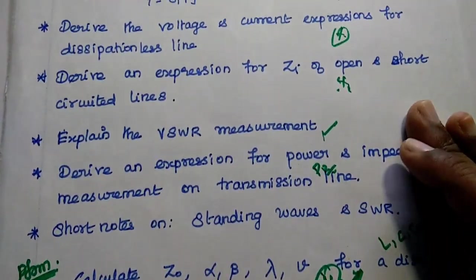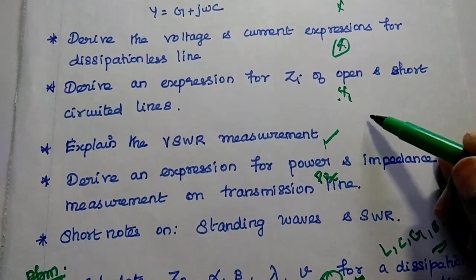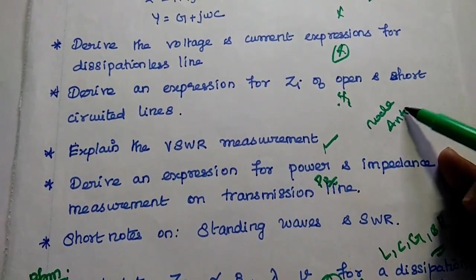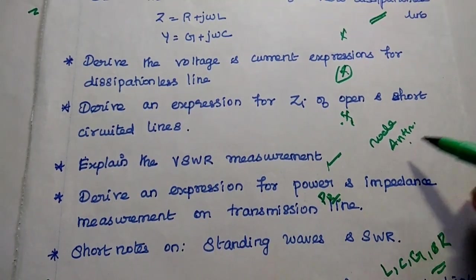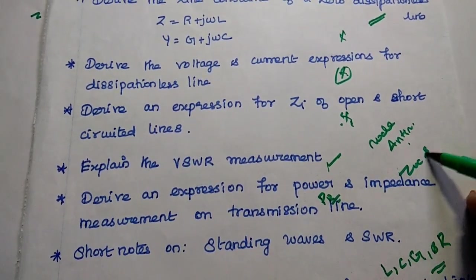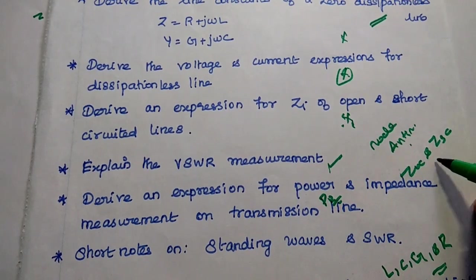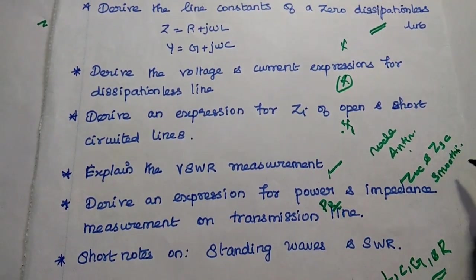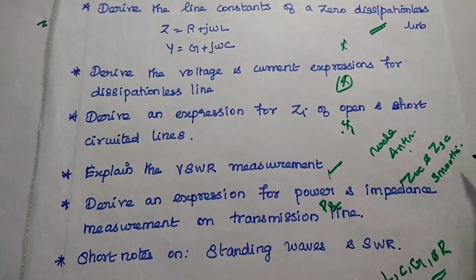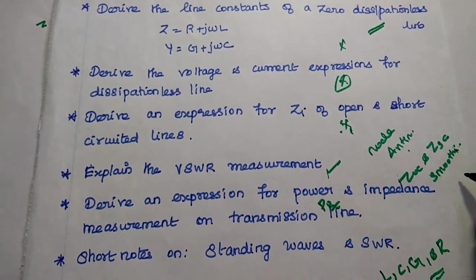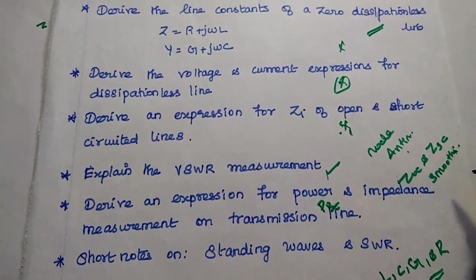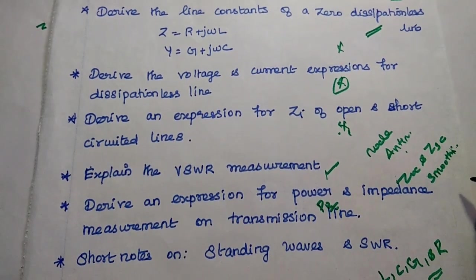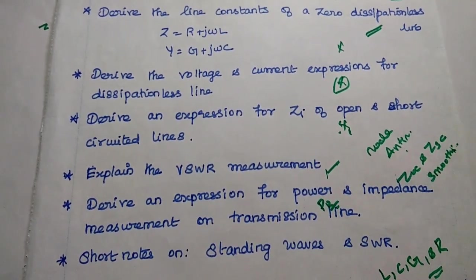We can also expect two more questions like: what is meant by node and what is meant by anti-node; the relation between Z_OC and Z_SC; and what is meant by a smooth line — that is, a line terminated with characteristic impedance is known as a smooth line. Also the condition for a dissipationless line. These are all important two-mark questions.